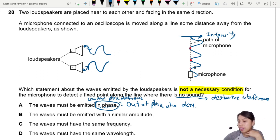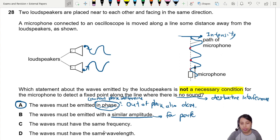The waves must be emitted with similar amplitude - yes, we need similar amplitude for perfectly destructive interference.